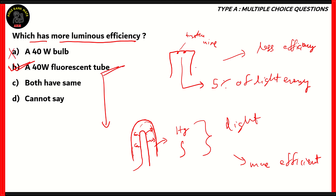Option A is incorrect because a bulb only has about 5% efficiency, placing it at the bottom of the spectrum when it comes to light sources. Option C, 'both are the same,' is incorrect because we now know that the 40-watt fluorescent tube is more efficient. And 'cannot say' is incorrect because we know that a bulb has only 5% while a fluorescent tube has significantly more. So option B, the 40-watt fluorescent tube, is the right option.